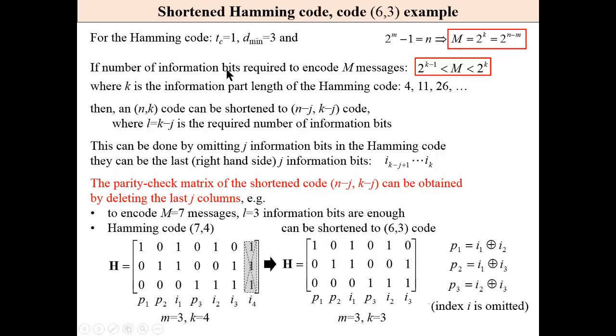If number of information bits required to encode M messages is in between 2 to the power of k, which is 4, 11, 26, and 2 to the power of k minus 1,